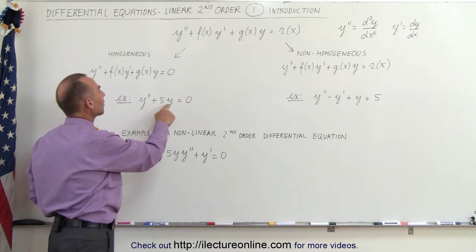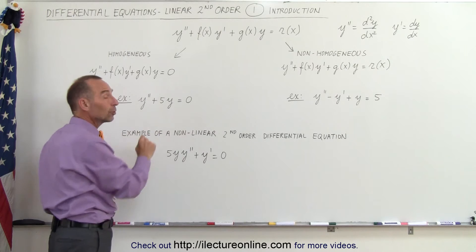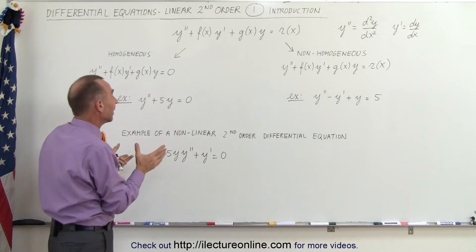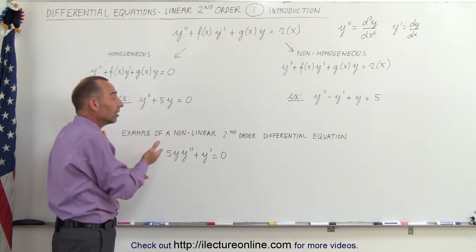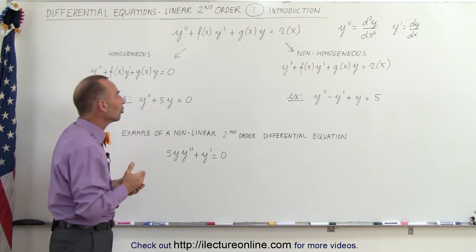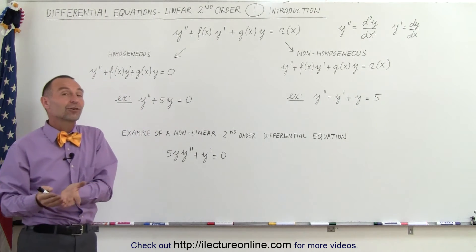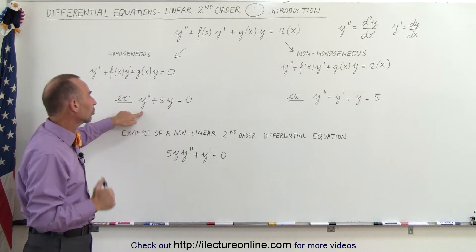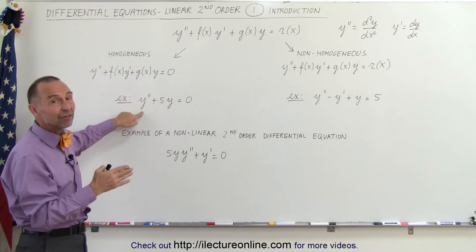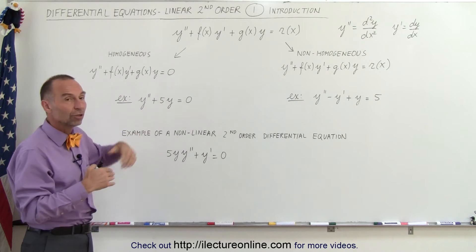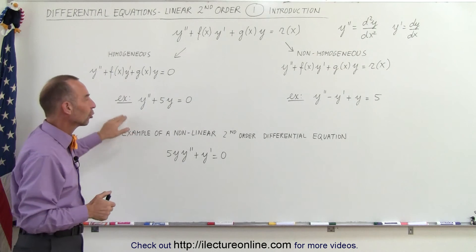Here we have y double prime plus five times y equals zero. Notice that the y prime term is not there. But nevertheless, it is still a legitimate second order differential equation, as long as it has a y double prime. All second order differential equations will contain a y double prime term. They do not have to contain any of the other terms to be considered a second order differential equation.